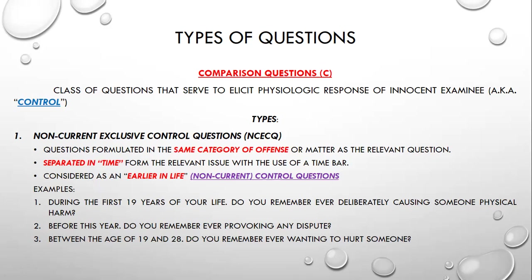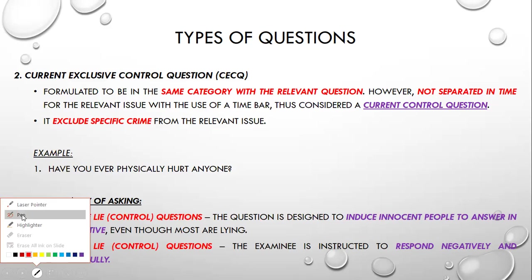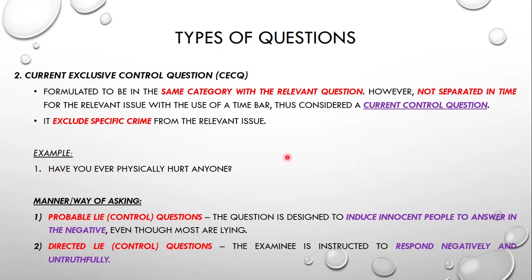Another type of control or comparison question is the Current Exclusive Control Question (CECP), also called the primary and secondary control question. It is formulated to be in the same category as the relevant question; however, it is not separated in time from the relevant issue with the use of a time bar. It excludes the specific crime from the relevant issue. Example: 'Have you ever physically hurt anyone?' — this is the present-time control question.